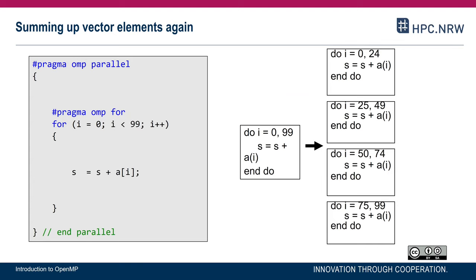Let's look at a familiar code from the previous video lecture on data scoping. We have the parallel region, a for loop, and we want to sum up all the elements of an array A. Our solution was to introduce a local variable sp, used in the parallel computation, and after the parallel computation we had a critical region where each thread's partial result was added to the global variable s.